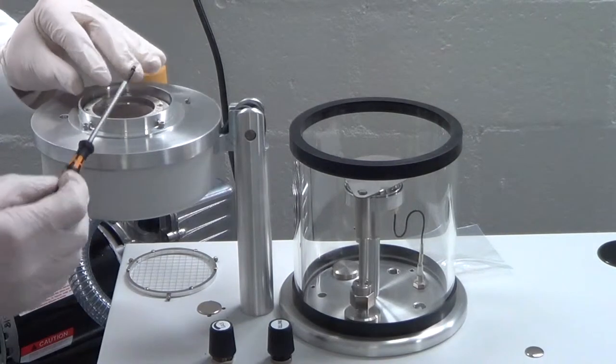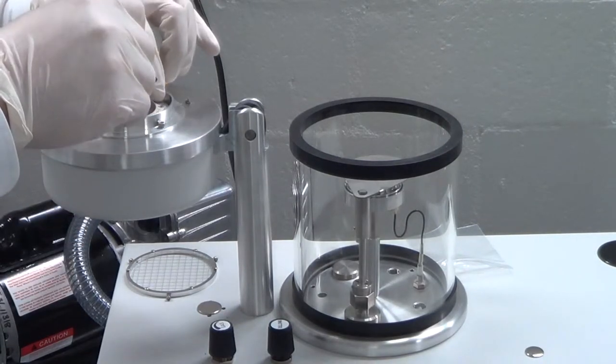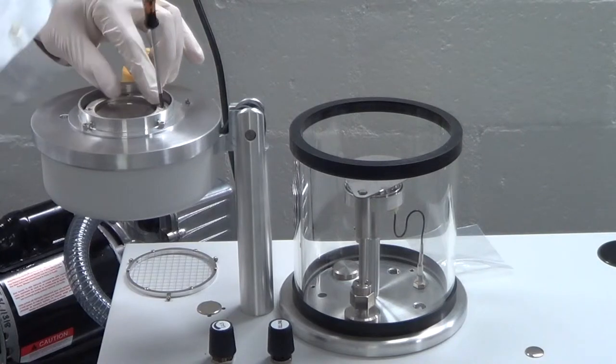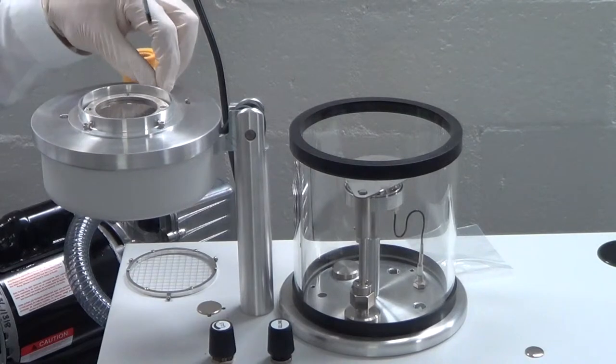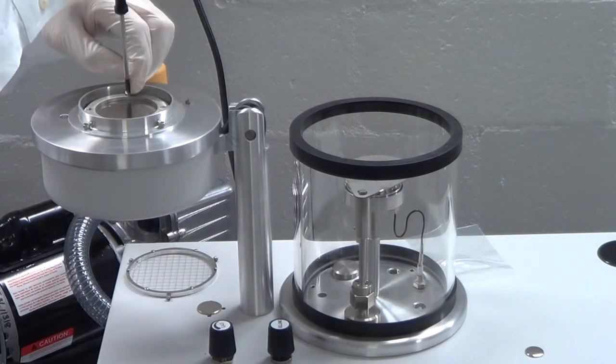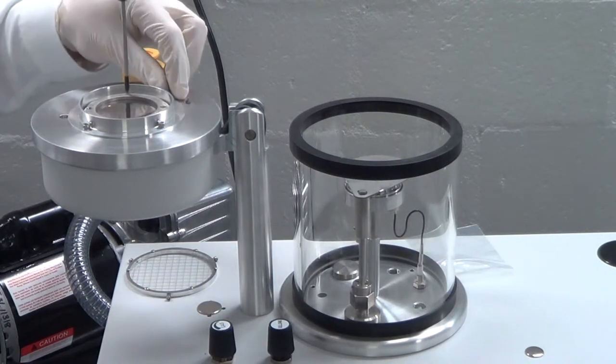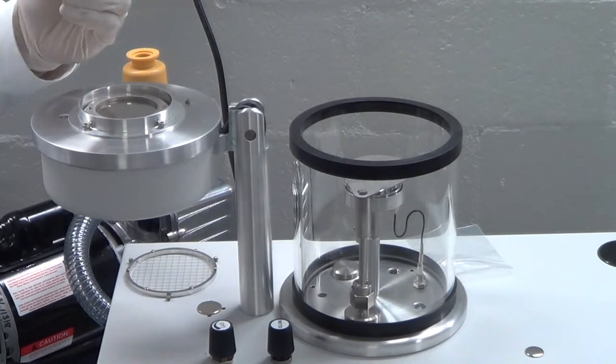Ensure the target is centered and the side of the retaining ring with the countersunk holes is facing up. Reinsert the four screws into the retaining ring. Do not tighten them all the way just yet. This will allow you to move the target if it is not centered properly.